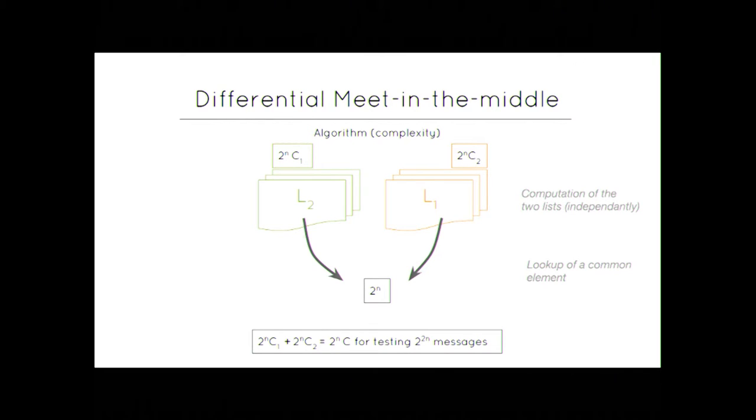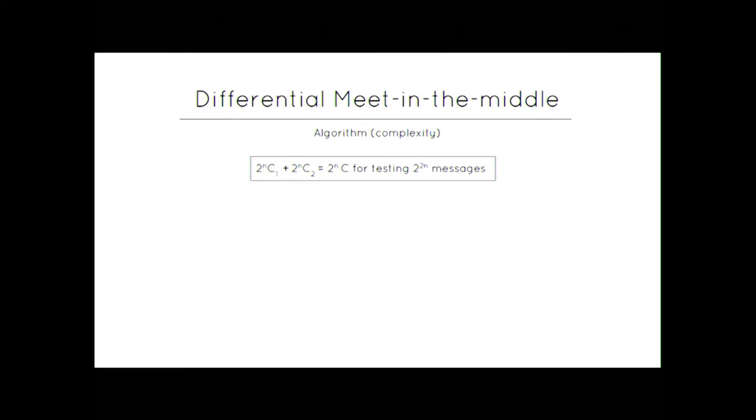Then, for a cost of 2^n C1 plus 2^n C2, you can test 2^(2n) messages, you can test if among 2^(2n) messages you get a pre-image. So, the point is that it's not sufficient because if you want to find a pre-image, you will have to test a volume, a total set of cardinality 2^k if k is the length of your hash.